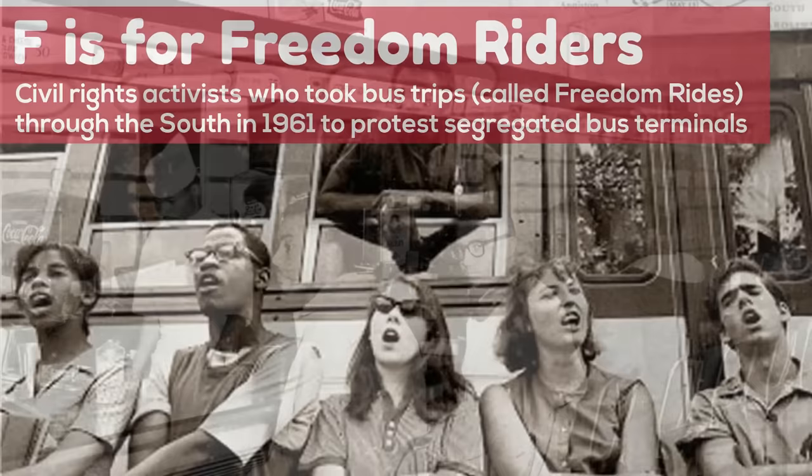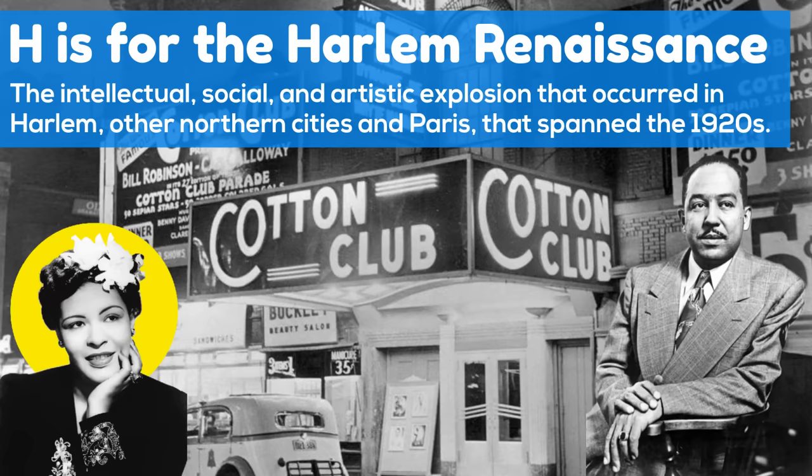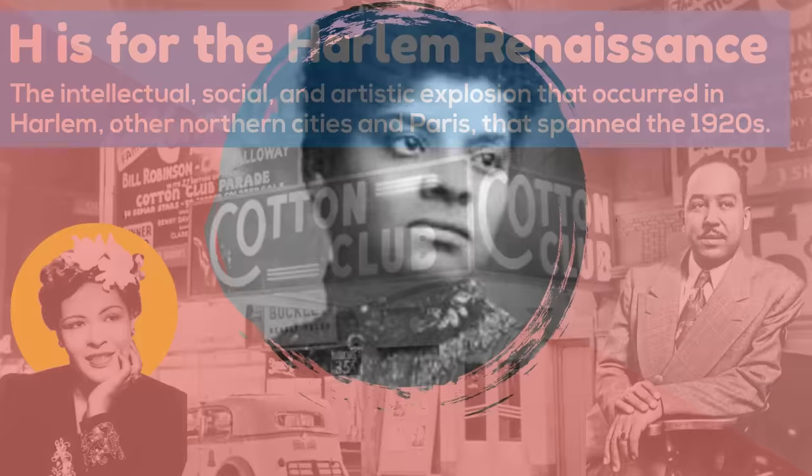G is for the Greensboro Four, the North Carolina A&T freshmen who sat at a whites-only lunch counter to protest segregation. Their actions sparked nationwide sit-ins. H is for the Harlem Renaissance, the intellectual, social, and artistic explosion that occurred in Harlem, other northern cities, and Paris that spanned the 1920s.